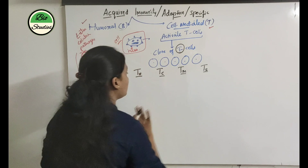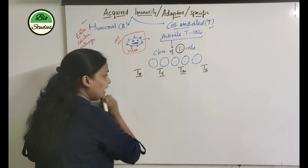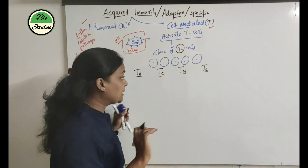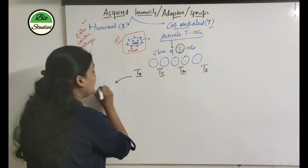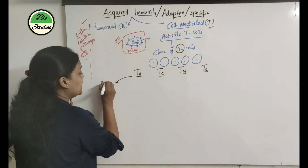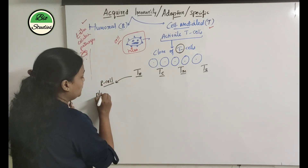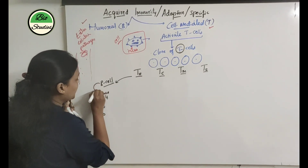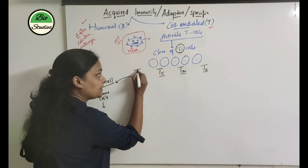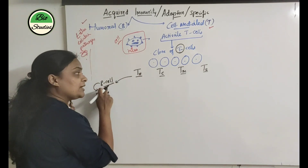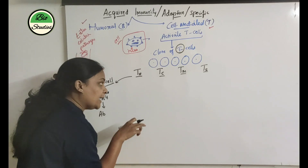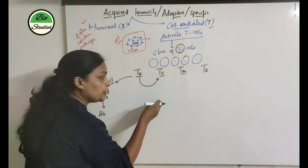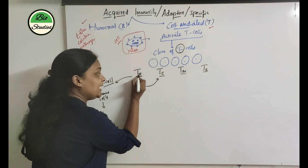Now the functions one by one — very very important. T helper cells will help each cell type. They help the B-cells to differentiate into plasma cells, and those plasma cells are used for antibody production. So T helper cells activate the B-cells and also stimulate the cytotoxic T-cells to do their function.